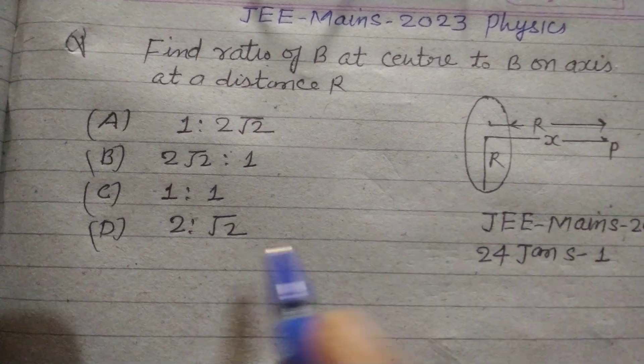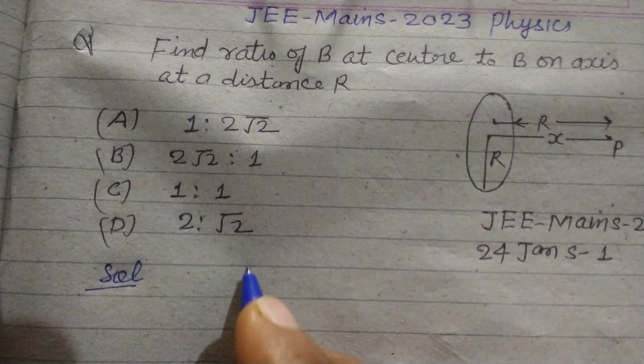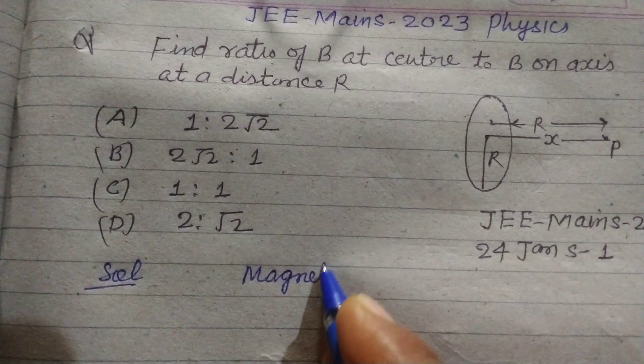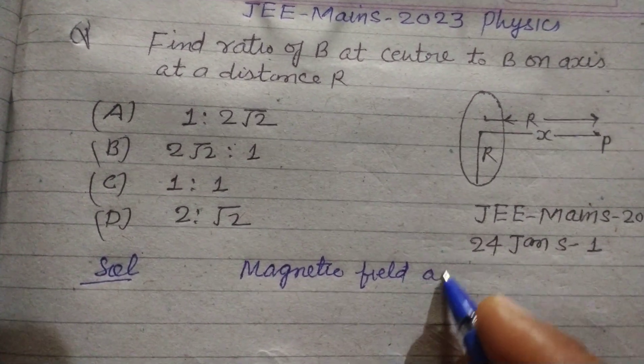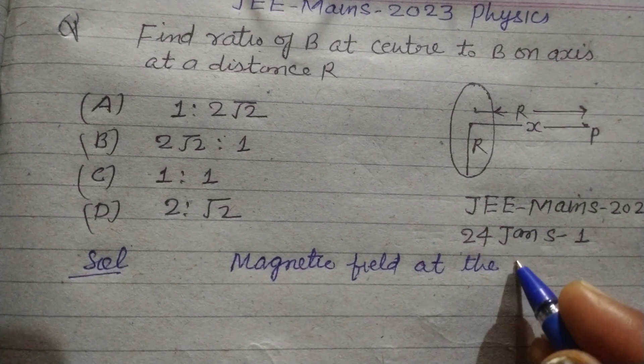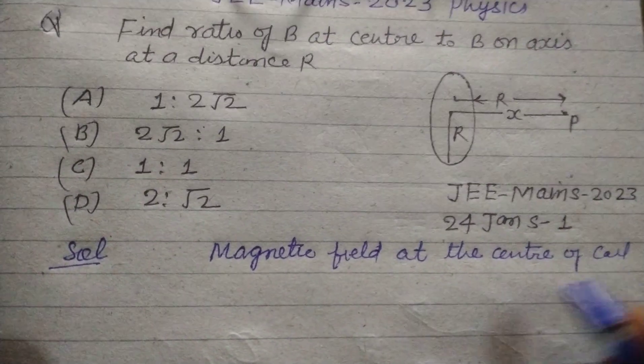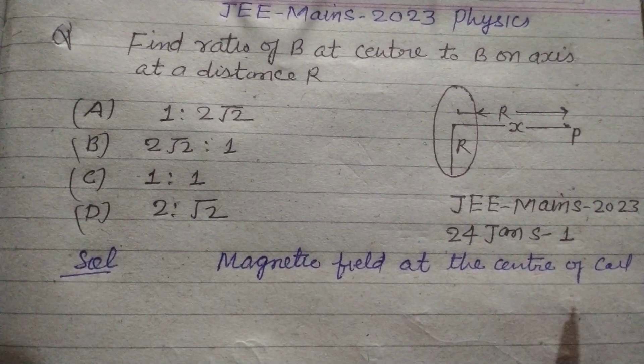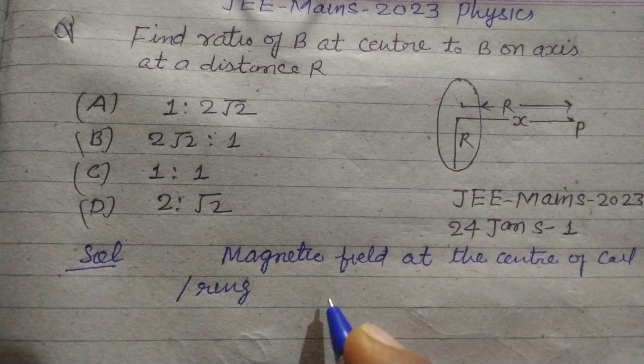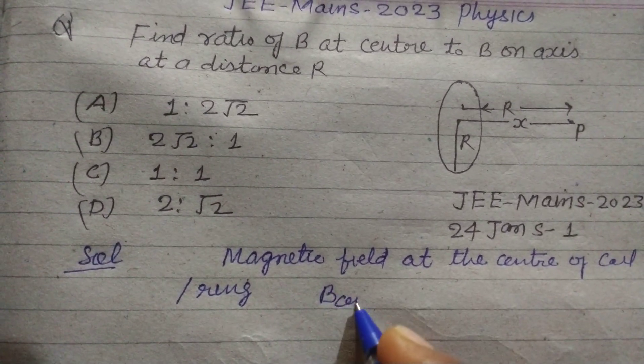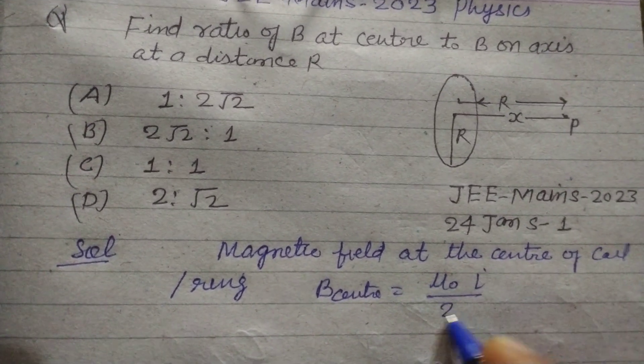So students, here is a coil having radius R. The magnetic field at the center of the coil or ring is B center equals μ₀I over 2R.